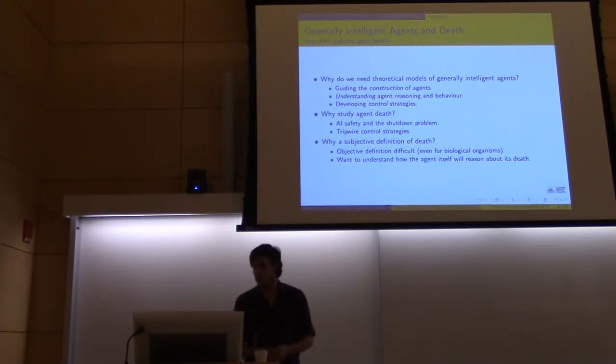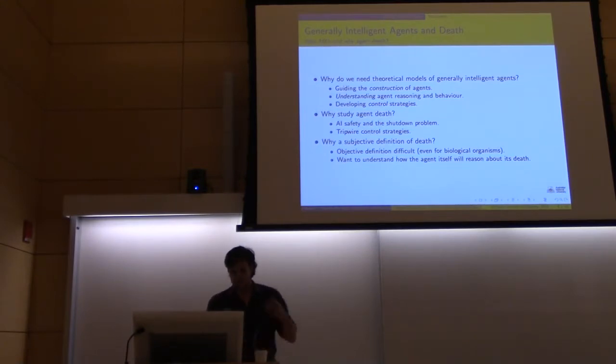Why study agent death in particular? The reason we think it's important is that it's quite relevant to a lot of problems in AI safety, in particular to the shutdown problem, which is arguably not the hardest problem in AI safety, but seems to be an important one given that most people's descriptions of what they think a safe AI takeoff looks like once we get to human level artificial intelligence or greater, is that we're unlikely to get it perfectly right the first time.